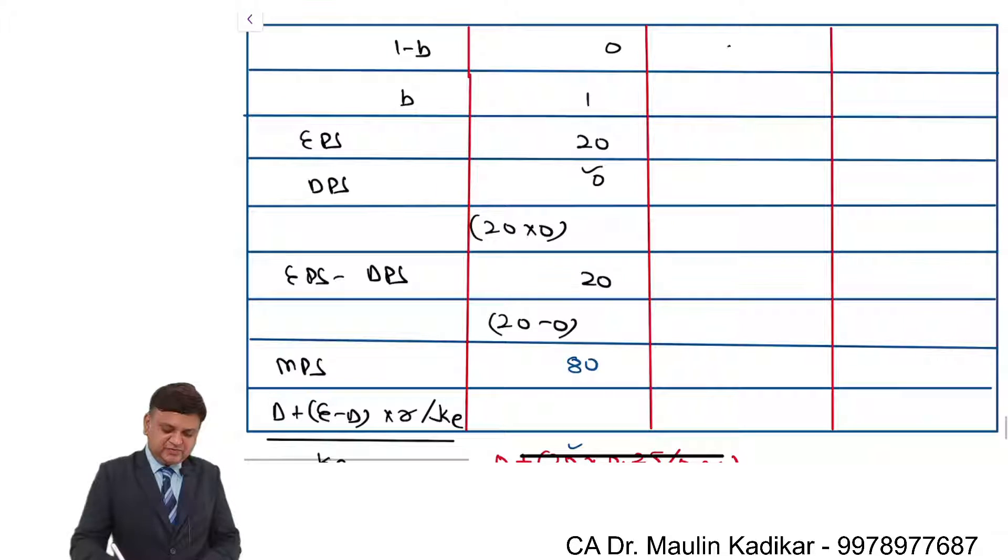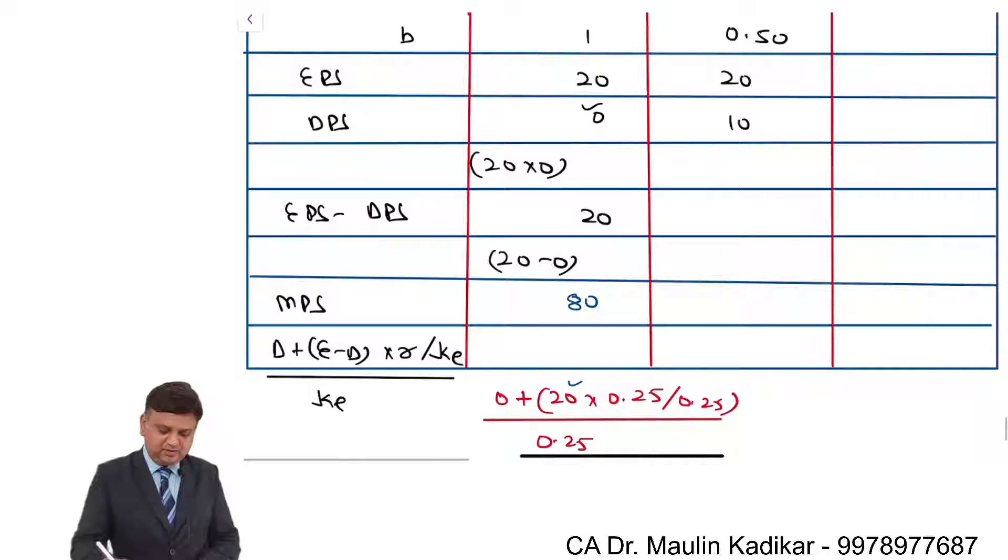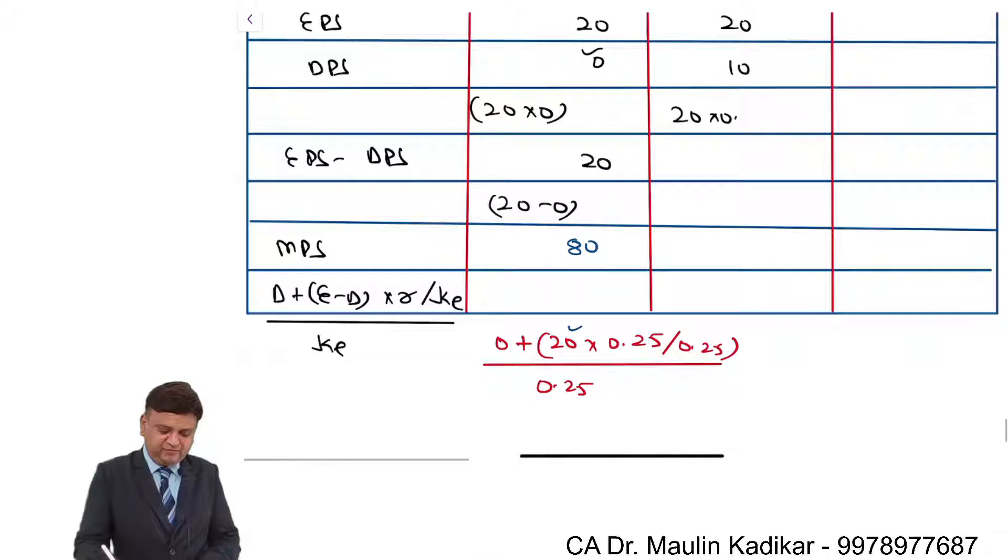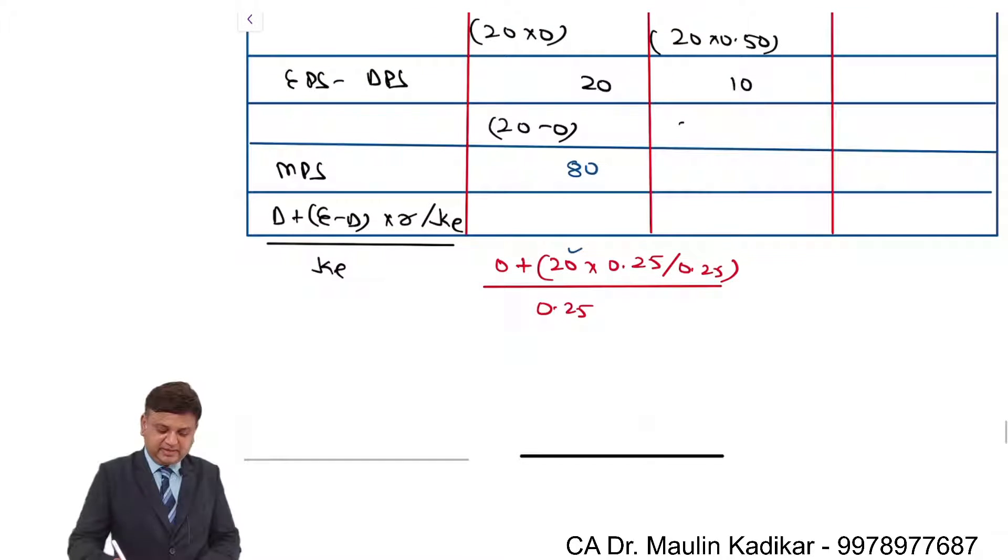In the second case, where it is 50-50, it is 20, it is 10, that is 20 into 0.5. This is once again 10, that is 20 minus 10.